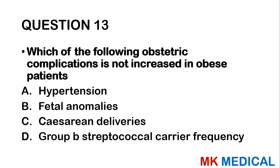Question 59: Commonest site of fertilization is: A — isthmus. B — ampulla. C — infundibulum. D — interstitial. These are parts of the fallopian tube. The widest part is where fertilization most commonly takes place — the ampulla. The answer is B.